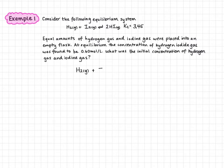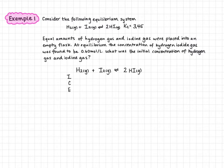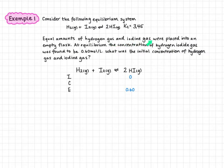We write: hydrogen gas plus iodine gas in equilibrium with 2 hydrogen iodide, and we write I-C-E down the side. We don't know the initial concentration of hydrogen iodide, so we fill in what we do know. The equilibrium concentration of hydrogen iodide is 0.60, the initial concentration was 0 because the flask was empty, and so the change for hydrogen iodide is positive 0.60.